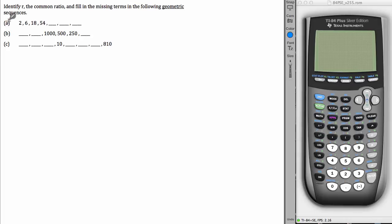Now let's start with example A, that is 2, 6, 18, 54, blank, blank, blank.